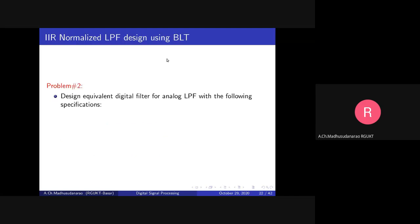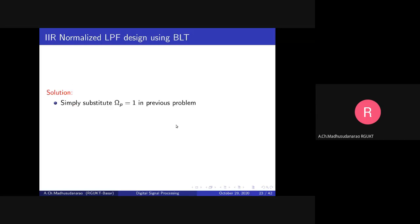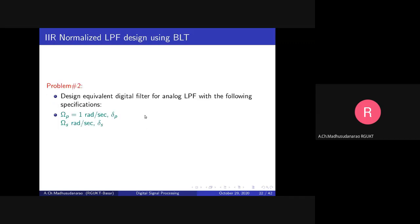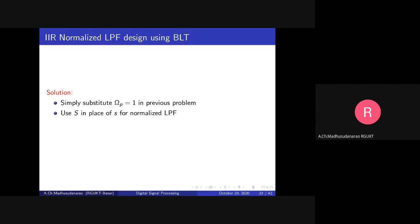Now, a normalized low pass filter design using bilinear transformation. The problem is to design an equivalent digital filter for a normalized low pass filter with the following specifications: omega_p = 1 radian per second, delta_p is the minimum required passband gain, omega_s radians per second is the stopband cutoff frequency, and delta_s is the maximum allowed stopband gain. Simply substitute omega_p = 1 in the previous problem to get this expression — that is the only difference. Also, use capital S notation instead of small s for the normalized low pass filter, just for convenience.